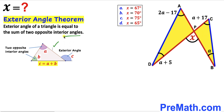The exterior angle of a triangle is equal to the sum of the two opposite interior angles, as you can see in this given triangle. This is our exterior angle, whereas a and b are our two opposite interior angles, such that angle c is going to be equal to angle a plus angle b.